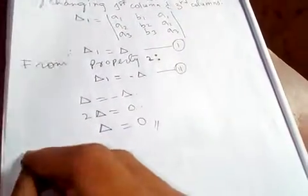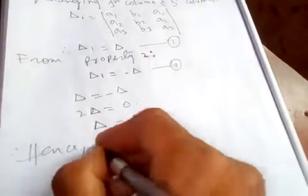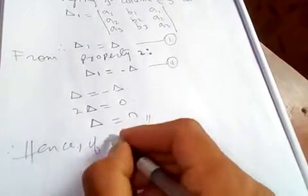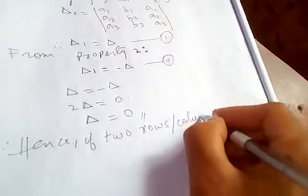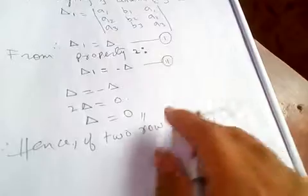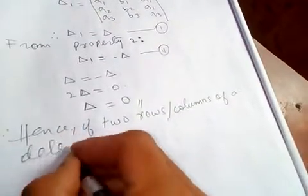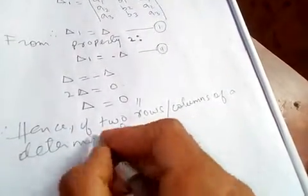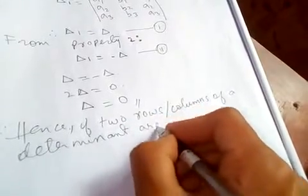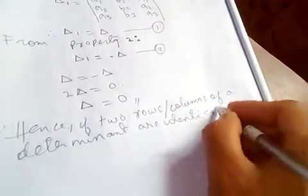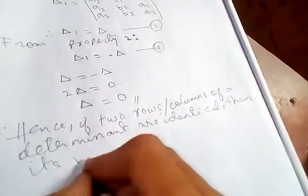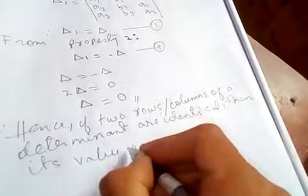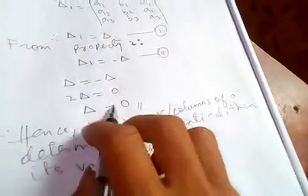Let's conclude: hence, if two rows or columns of a determinant are identical, then its value, that is the determinant value, is just zero. We have the proof here. This is our proof.